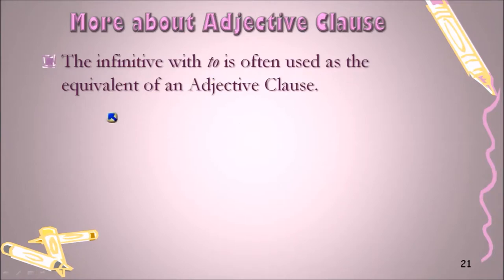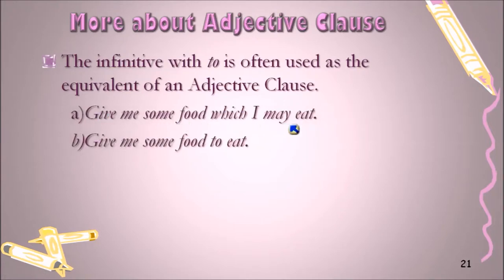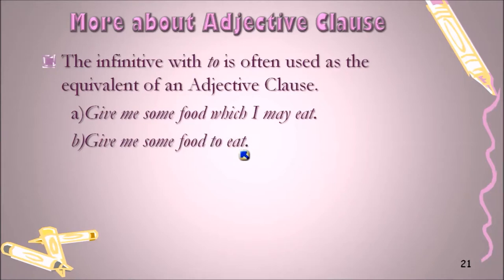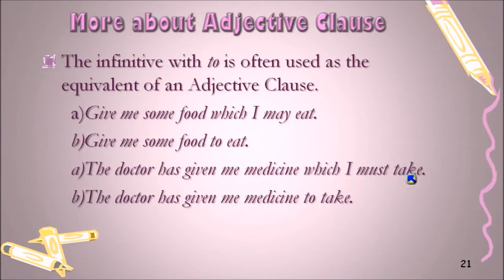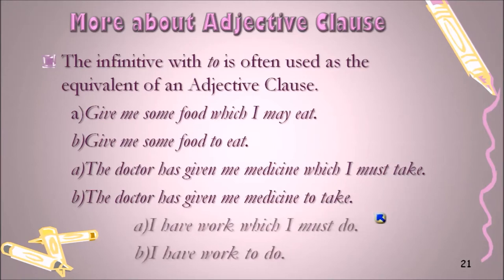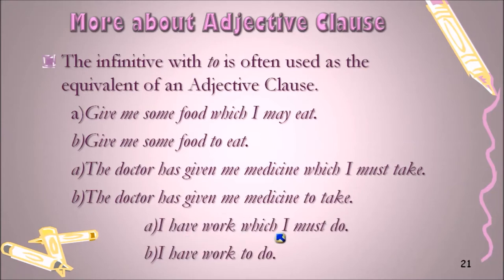The infinitive with 'to' is often used as the equivalent of an adjective clause. For example, 'Give me some food which I may eat' becomes 'Give me some food to eat' — the infinitive 'to eat' does the work of the adjective clause 'which I may eat.' Similarly, 'The doctor has given me medicine which I must take' becomes 'The doctor has given me medicine to take,' and 'I have work which I must do' becomes 'I have work to do.' This is how an adjective clause can be replaced with a 'to' infinitive.